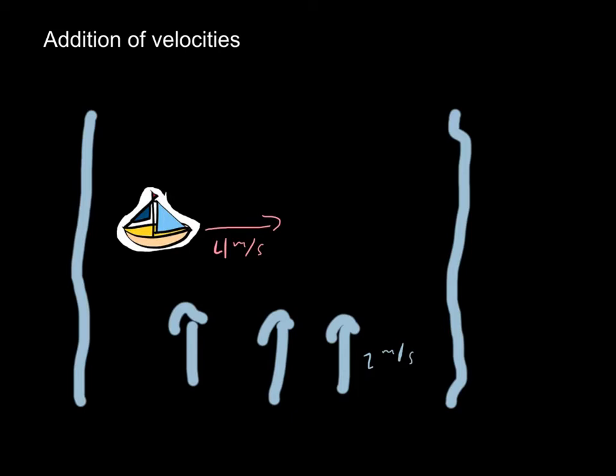To do that, we're going to realize that the boat's motion here going across the river this way and the motion of the river that way are perpendicular to each other. So it's almost like xy coordinates. So we can use vector addition to figure it out.